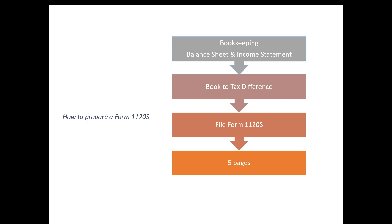So how do you prepare Form 1120S? First, like a C Corporation and partnership LLC, you need to prepare bookkeeping first — meaning you need to organize your expenses, income, assets, and liabilities, and compile financial statements such as a balance sheet and income statement or profit and loss statement. Then you figure out the book income and the taxable income, since certain expenses are not deductible for tax purposes or certain income is not includable for income tax purposes. You need to know those items before you can prepare your Form 1120S.